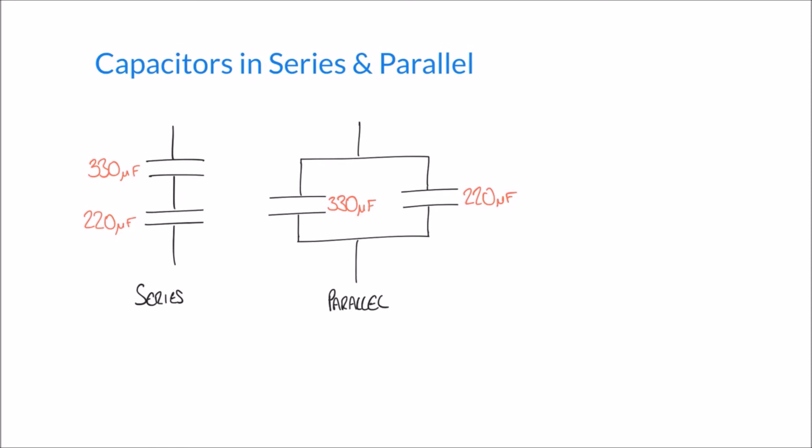With capacitors, we're going to use a very similar method, but these formulas have to be applied the other way around. So in the case of series capacitors, it's going to be 1 over C1 plus 1 over C2 gives me 1 over the total.